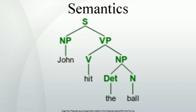Terms such as semantic network and semantic data model are used to describe particular types of data models characterized by the use of directed graphs in which the vertices denote concepts or entities in the world, and the arcs denote relationships between them. The semantic web refers to the extension of the World Wide Web via embedding added semantic metadata, using semantic data modeling techniques such as Resource Description Framework and Web Ontology Language.